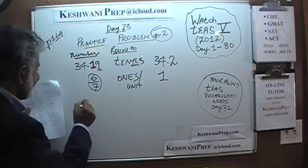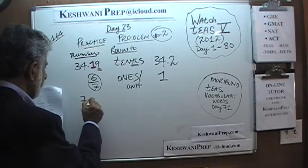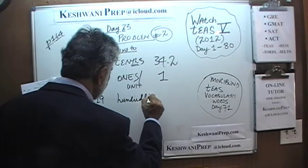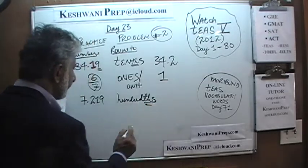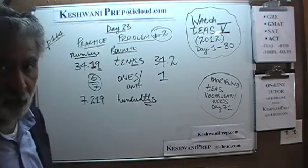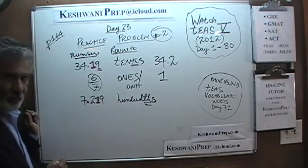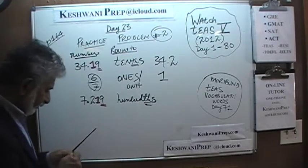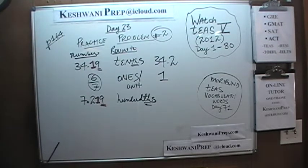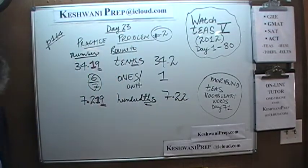Next we have 7.219, rounded to the nearest hundredth. First thing we need to do is locate the hundredth digit. Here is the decimal, this is the tenth digit, and this is the hundredth digit right here. We look at one digit after it — the digit to the right. Is it five or more? Yes. So 7.219 rounded to the nearest hundredths becomes 7.22.